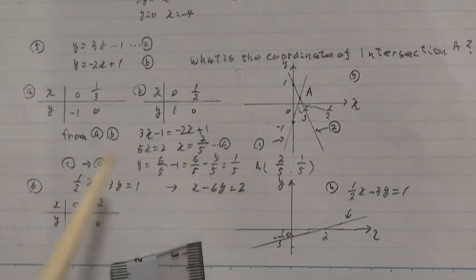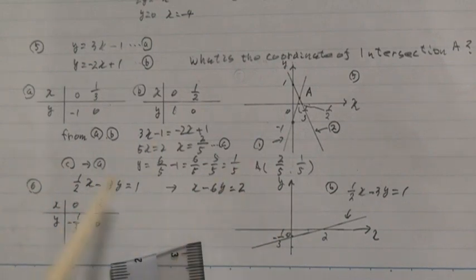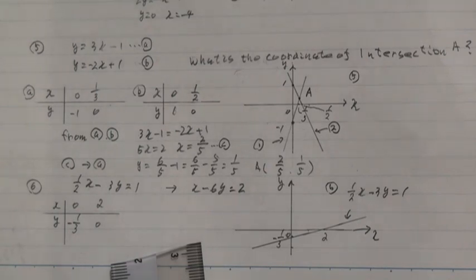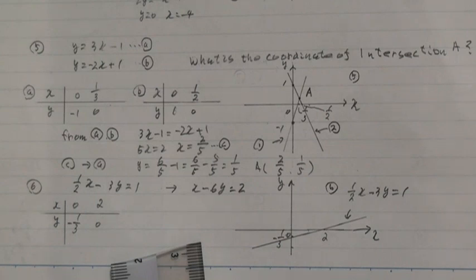And this equation, multiply both sides by 2. And this graph, each one over five.